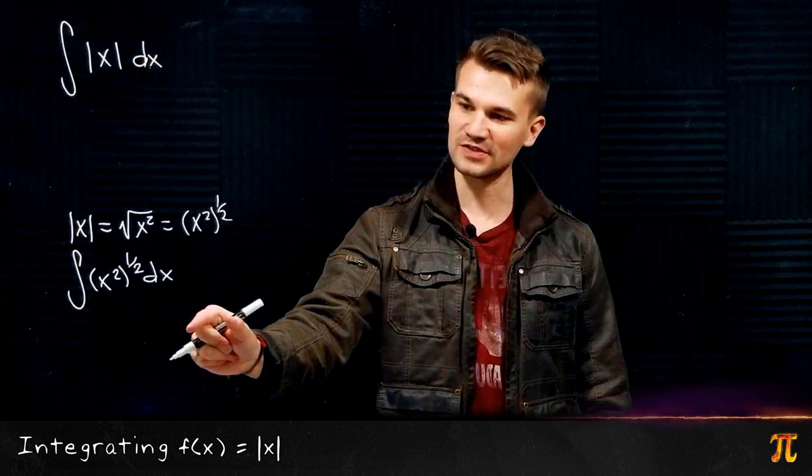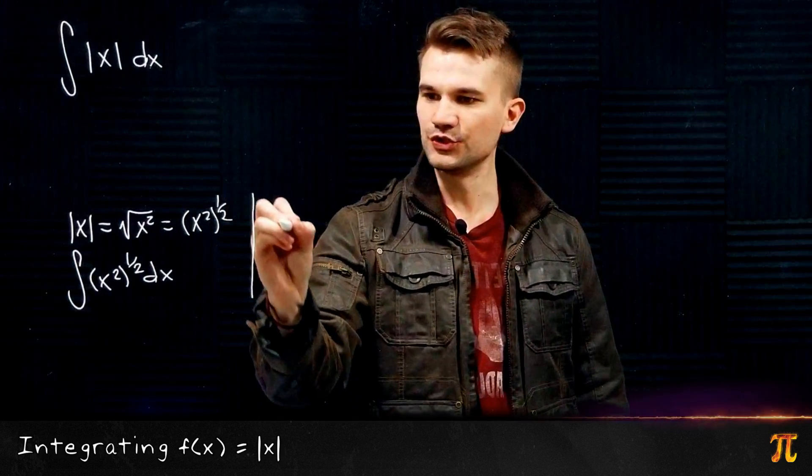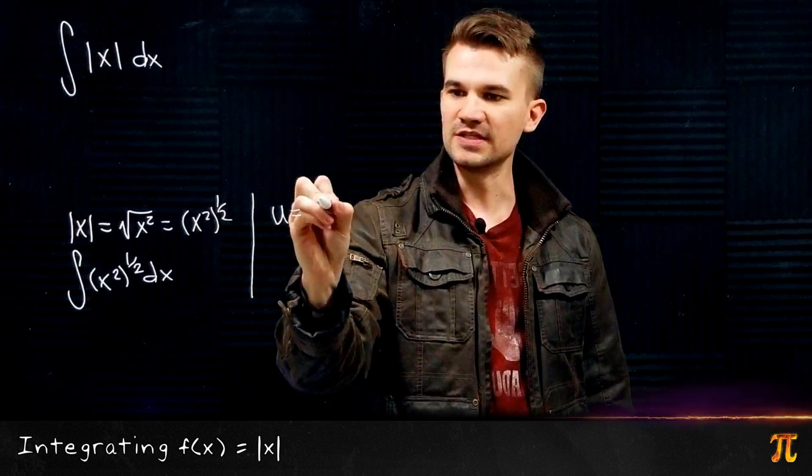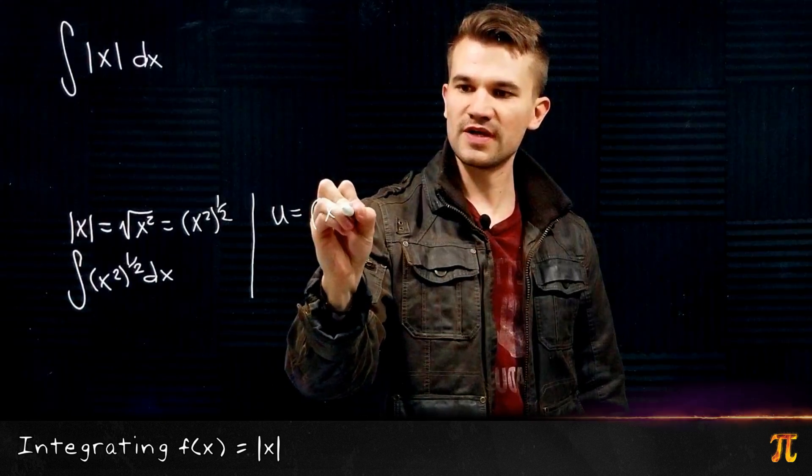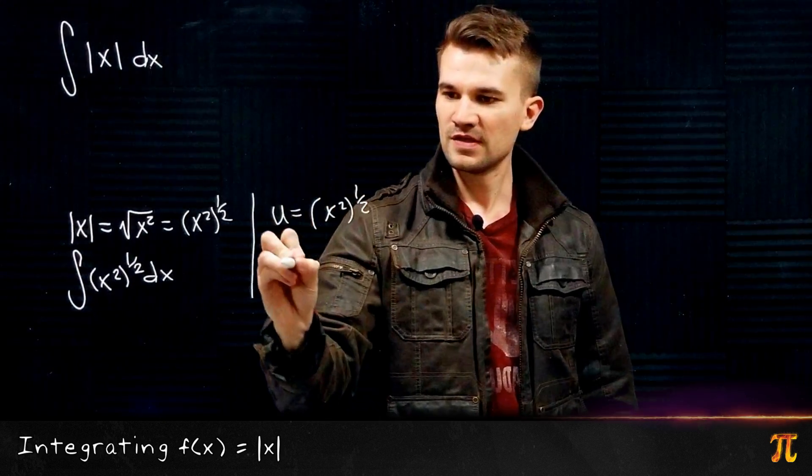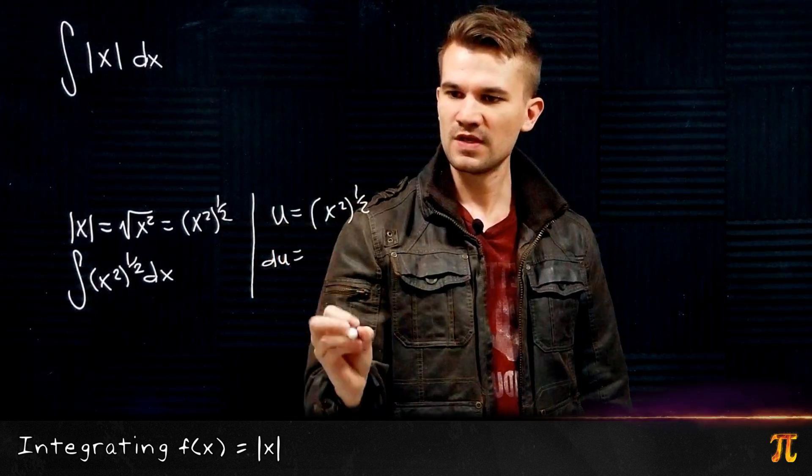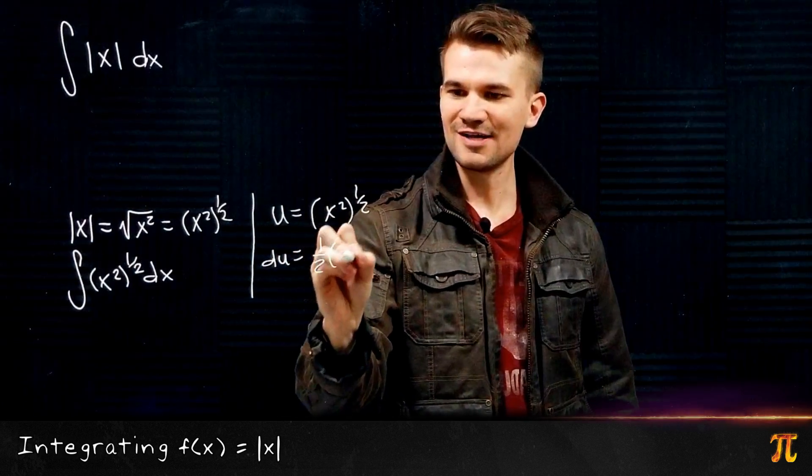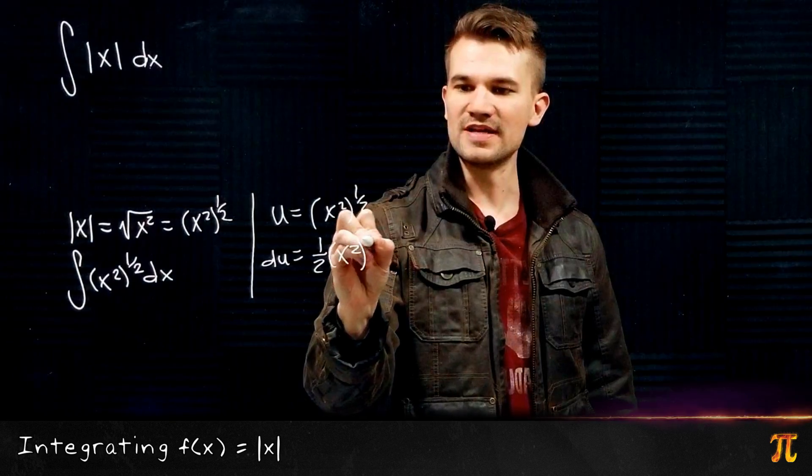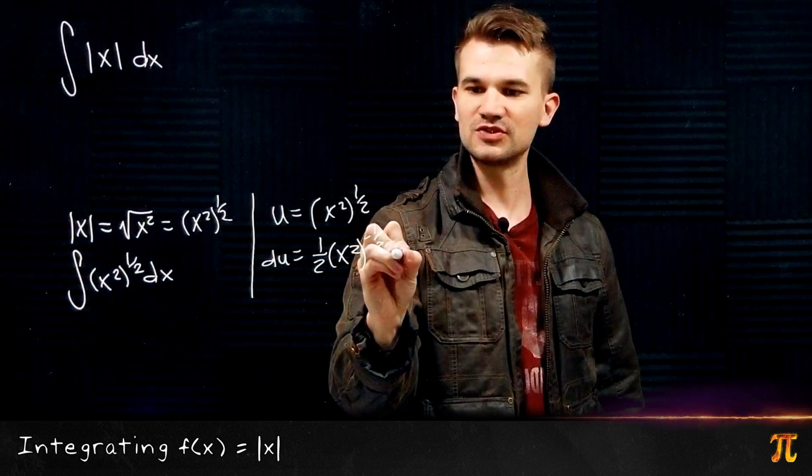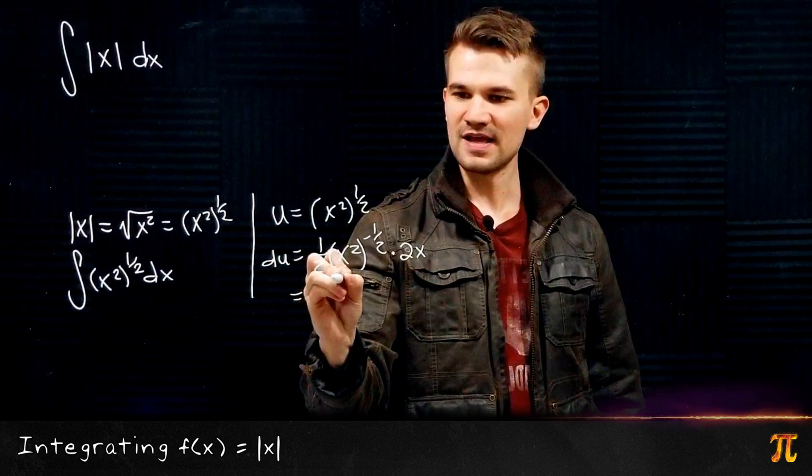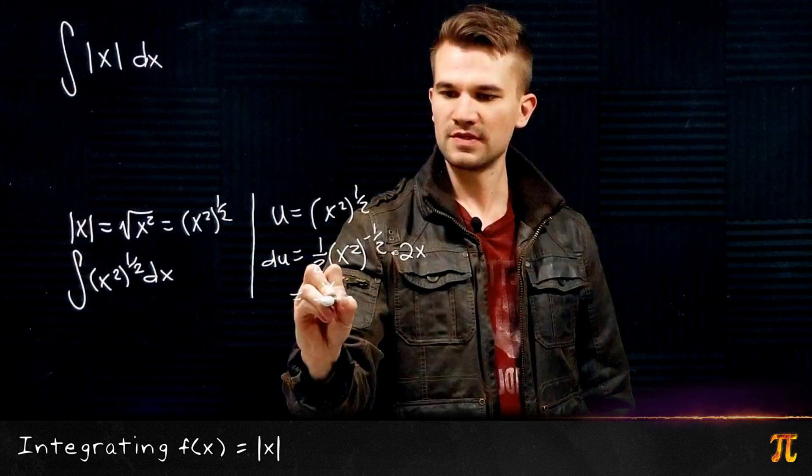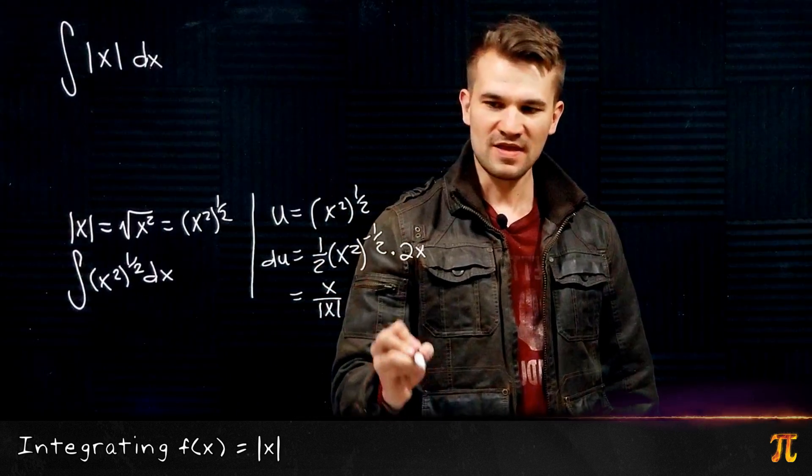We can use integration by parts. So if we let u (not you, but the letter u) be (x²)^(1/2), then du is (1/2)(x²)^(-1/2) times 2x, and this can be written as x over |x|.